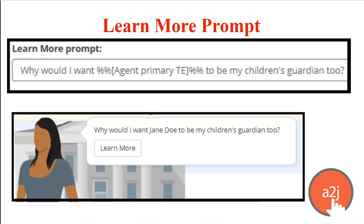Here is the variable macro in a learn more prompt. In this example, the end user gave you the name of their agent, and you asked a follow-up question of whether they'd like that person to be their children's guardian as well. You can use the agent's name already saved in the answer file instead of just saying, 'why would I want the agent to be my children's guardian too?' It clarifies the object of the sentence in a quick and easy way for the end user.